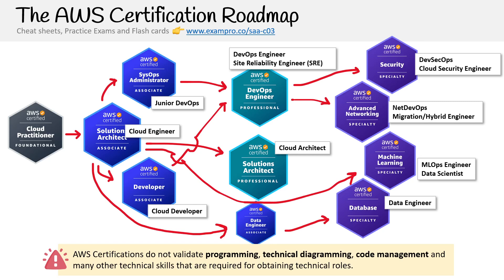I have seen people get seven certifications all the way to pros and specialties, and when we went to evaluate their skills, we found they did not know how to clone a Git repo and did not know how to write a line of code. It is possible to pass these by just studying the lecture content, but if you want to be job ready, you need to do some extra work.